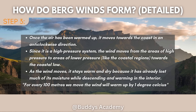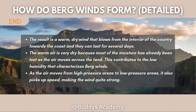Once the air has been warmed up, it moves towards the coast in an anti-clockwise direction. Since it is a high pressure system, the winds move from areas of high pressure to areas of lower pressure, like the coastal regions towards the coastal low. As the air moves, it stays warm and dry because it has already lost much of its moisture while descending and warming in the interior. A very important point to remember is that for every 100 meters the wind moves, it will warm up by 1 degree Celsius. The result is a warm, dry wind that blows from the interior towards the coast and can last for several days, with low humidity and increasing speed.